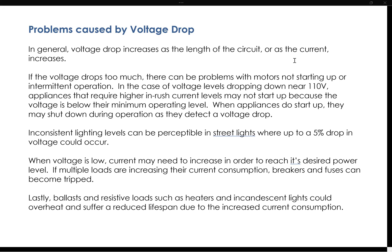Sometimes when appliances do start up and there's a voltage drop issue, they will shut down during operation because they have a way of detecting that voltage drop, and then the appliance shuts off. This causes issues that are hard to diagnose. It can even be apparent in inconsistent lighting levels — for example, with long street lights, where up to a 5% drop in voltage can occur, and that's actually perceptible to the human eye.